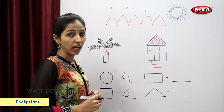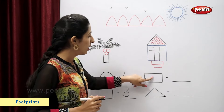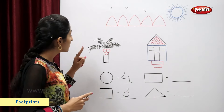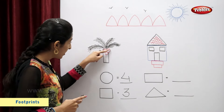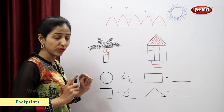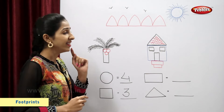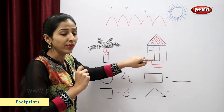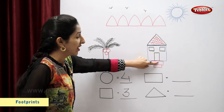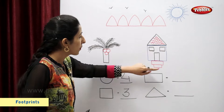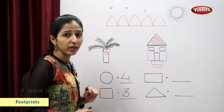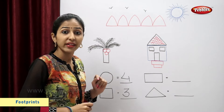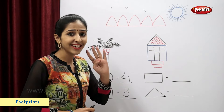Now let's look for rectangles. This is a rectangle. So one, two, three, four. So there are total four rectangles.